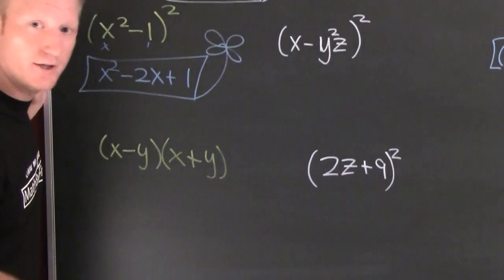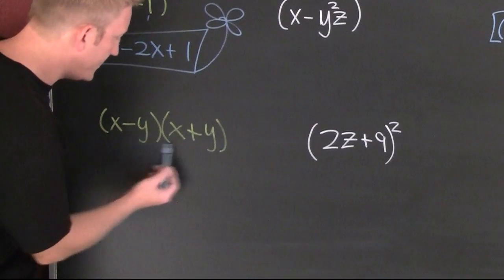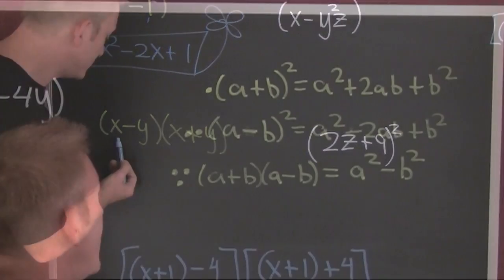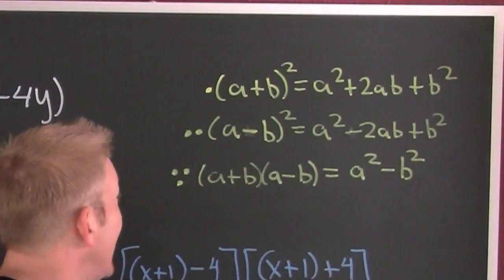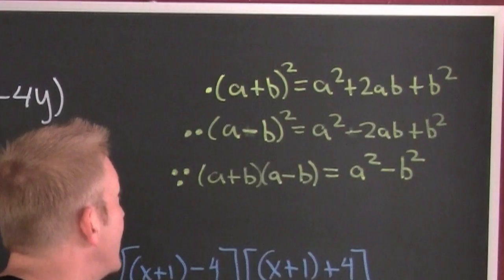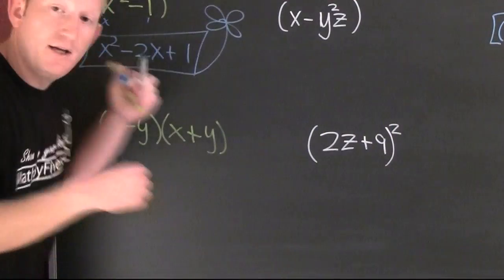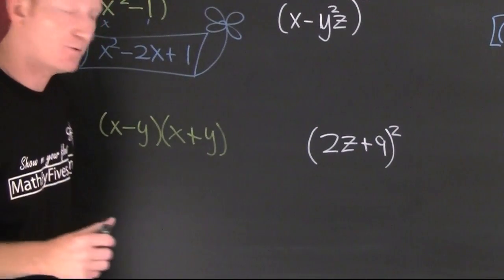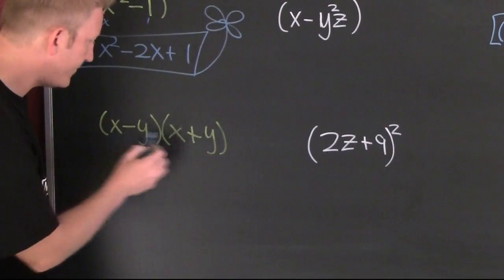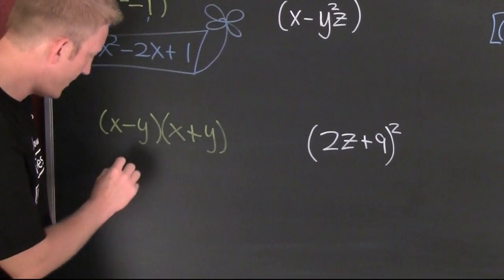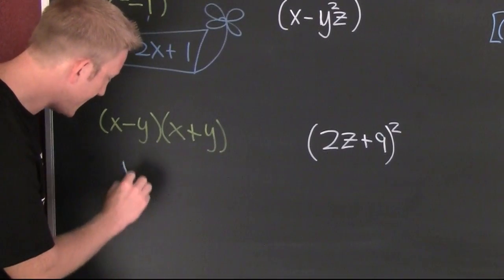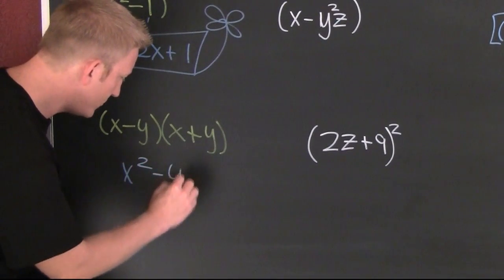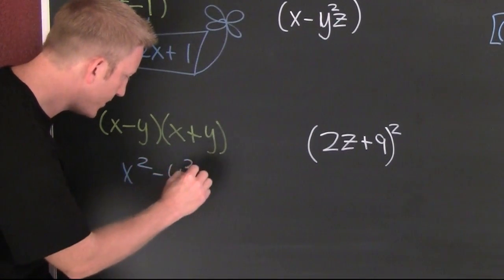And another one down here — take a look at that. It's screaming difference of squares every single time. This is x squared minus y squared.